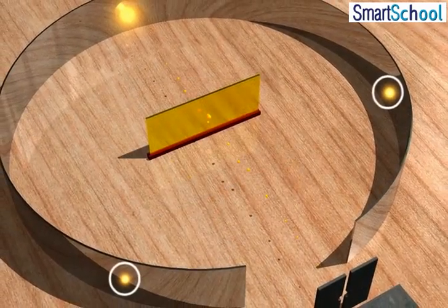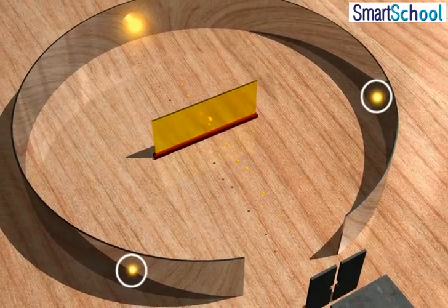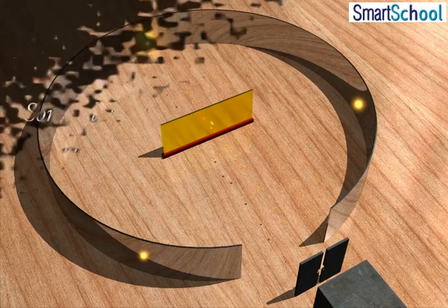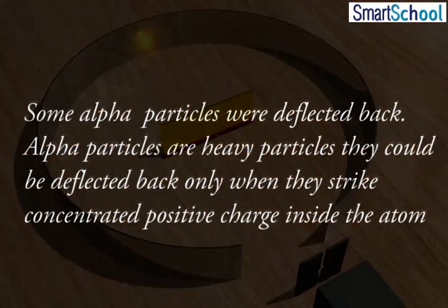The alpha particles which deflected through large angles were those which passed close to the positive body. Since some alpha particles were deflected back, and alpha particles are heavy particles, they could be deflected back only when they strike a heavy body inside the atom.